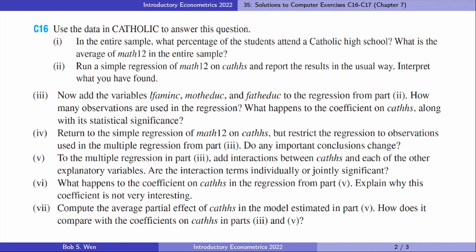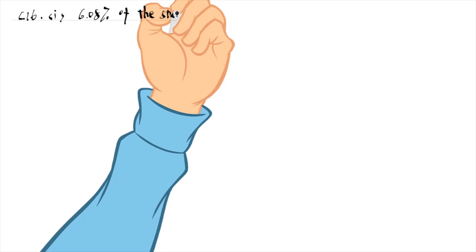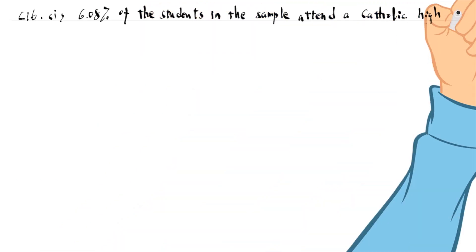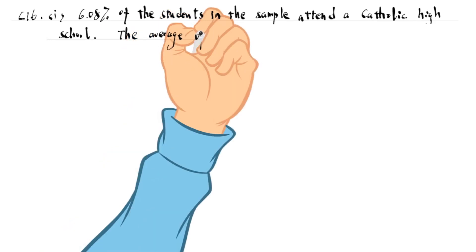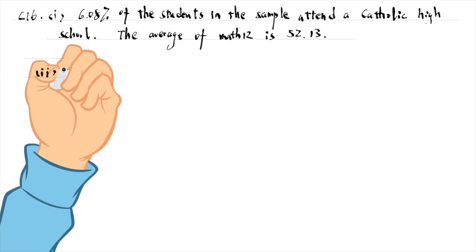Computer exercise number 16 is about the effect of attending Catholic high schools on math test scores. In the first part, we use the tabulate command to find the percentage of students attending a Catholic high school, and we use the summarize command to see the sample mean of math scores. 6.08% of the students in the sample attend a Catholic high school. The average of math12 in the entire sample is 52.13.